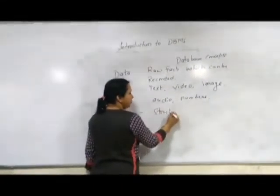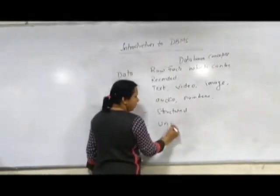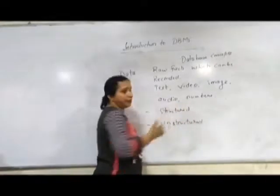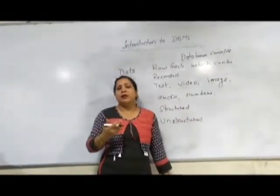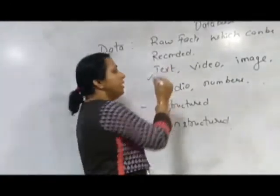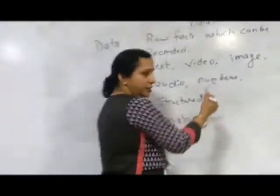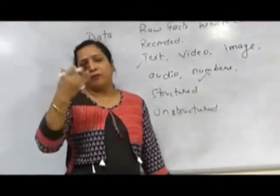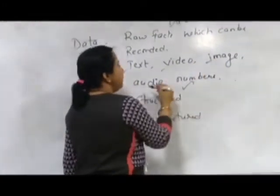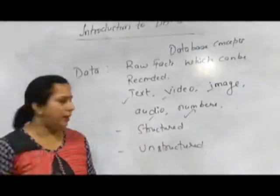Now we can divide this data into two formats: it may be structured or it may be unstructured. Structured data means it is in a well-organized form. Numbers can be recorded in a proper sequential manner. Video, image, and audio are all examples of unstructured data.